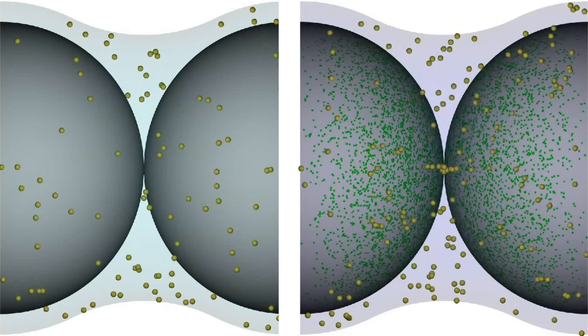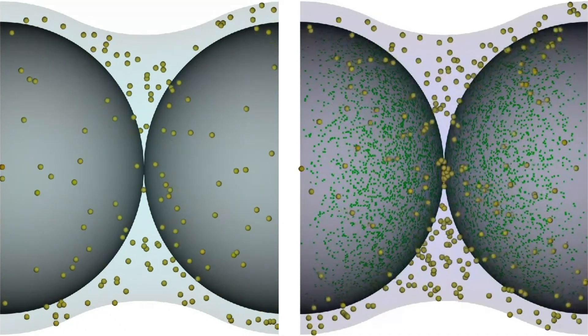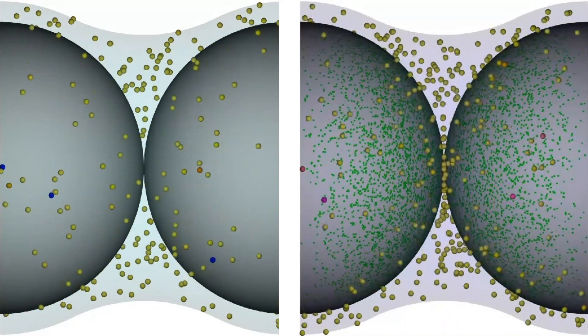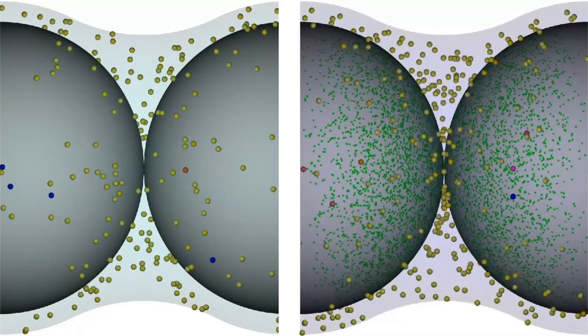Here we have movies from mechanistic four-scale simulations in the hemisphere and cell collector under favorable conditions on the left and under unfavorable conditions with nanoscale heterogeneity shown as green dots on the right.